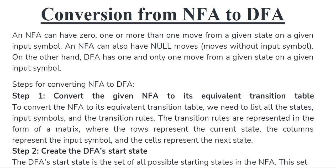Whatever the NFA is given, from that NFA we have to draw the equivalent transition table of the NFA. Step one is: first of all, we have to convert the given NFA to its equivalent transition table — we have to write the NFA transition table. Whatever is the initial state in the NFA transition table, the same initial state will be applicable to the equivalent DFA also.